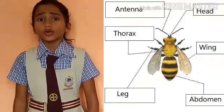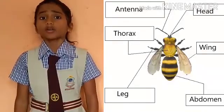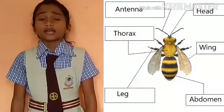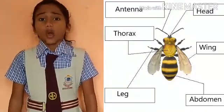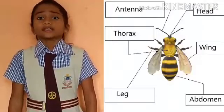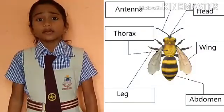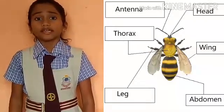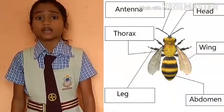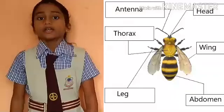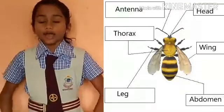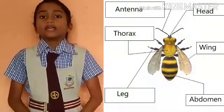But today I am going to say about the body parts of an insect. Commonly there are three types of body parts of an insect. They are head, thorax and abdomen.